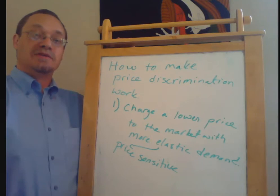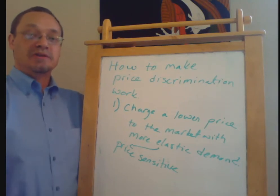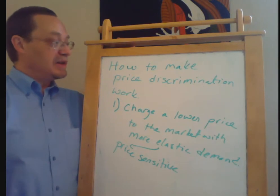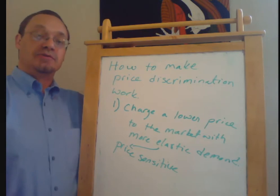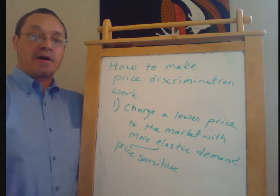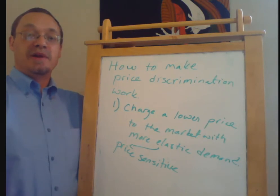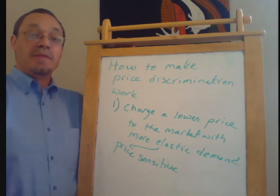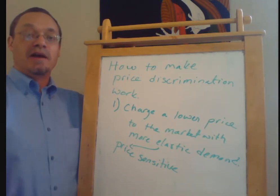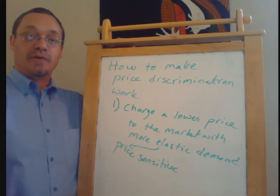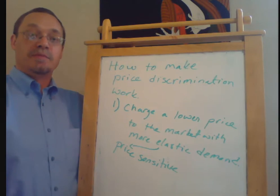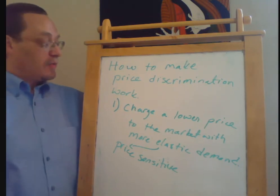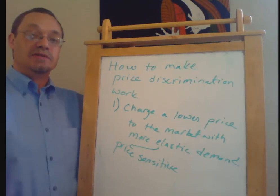It could be that you have more competitors in one market than another — the more competitors you have, the more elastic the demand is. This gets to one of the most important points: price sensitivity and the ability to price discriminate depend heavily upon market structure. A perfectly competitive firm's products are perfect substitutes for everyone else's, so its ability to price discriminate is extremely limited or basically non-existent. Monopoly firms, on the other hand, by definition have no close substitutes for their product, so their ability to implement price discrimination is much higher.